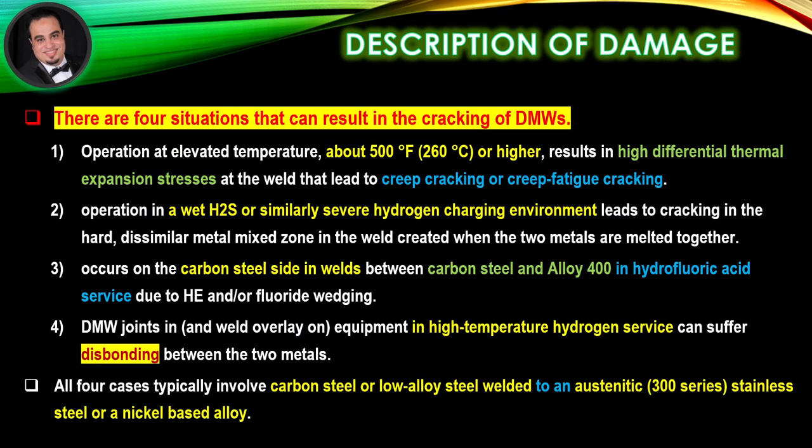Description of damage. There are four situations that can result in the cracking of dissimilar metal welds. In the first, operation at elevated temperature — about 500 degrees Fahrenheit or higher — results in high differential thermal expansion stresses at the weld that lead to creep cracking or creep fatigue cracking. In the second, operation in a wet hydrogen sulfide or similarly severe hydrogen charging environment leads to cracking in the hard dissimilar metal mixed zone in the weld created when the two metals are melted together.